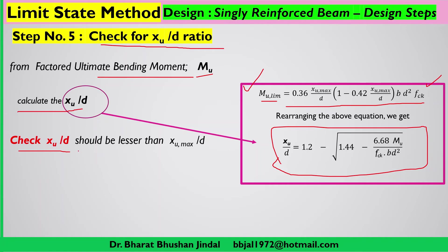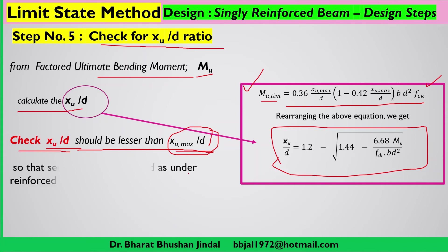After calculating xu/d, check whether xu/d is less than xu_max/d. You must remember how to obtain the value of xu_max/d from the code. The xu/d must be less than xu_max/d so that the section is designed as an under-reinforced section. If xu/d is greater than xu_max/d, the section will be over-reinforced and you need to redesign — adjust d so that xu/d is less than xu_max/d.